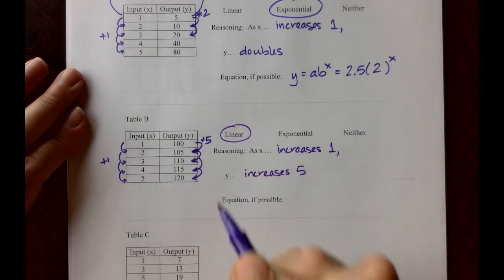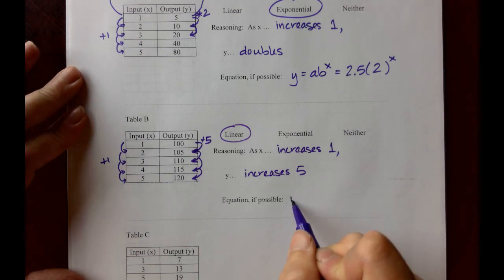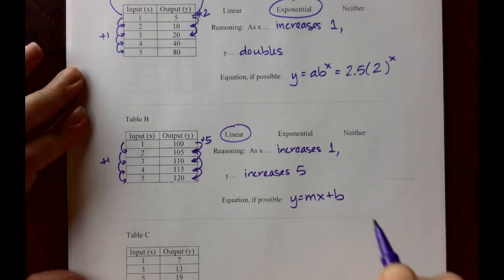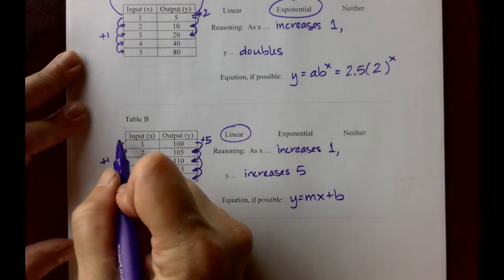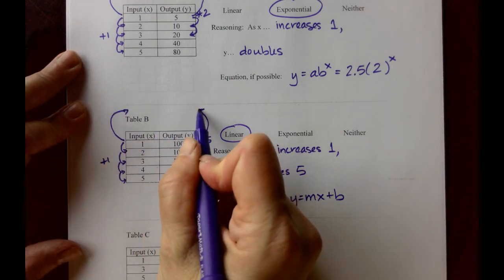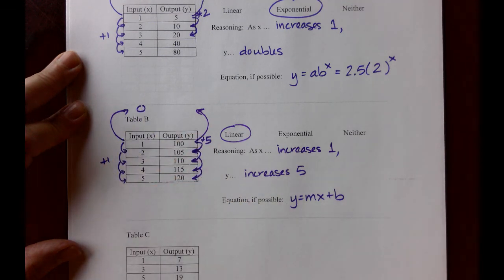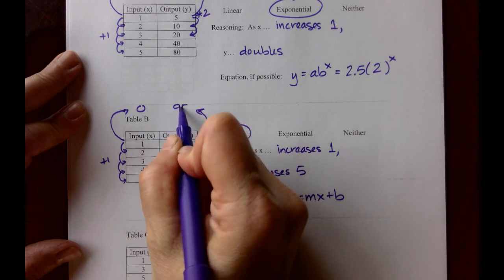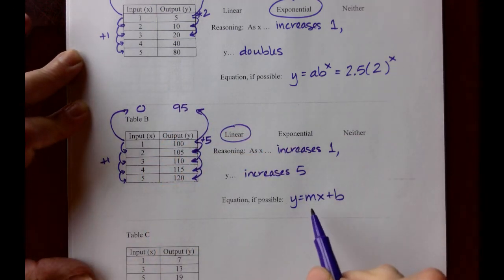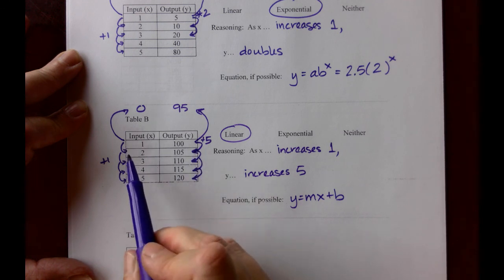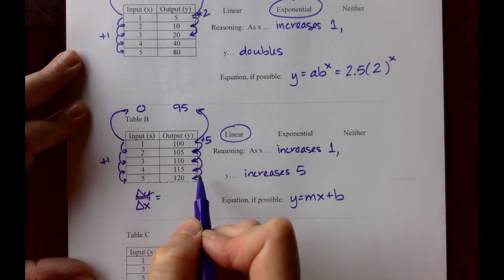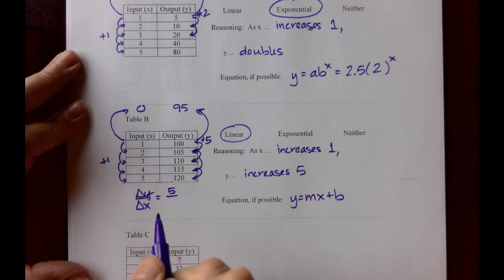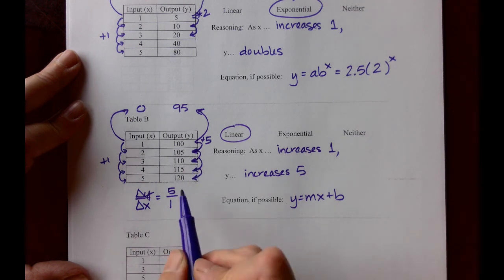That tells us that we have a linear relationship. Our equation would have the form y equals mx plus b, where the b here is our y-intercept, and m is our slope. To find the y-intercept, we can go backward in the table. We can go to x equals 0 by subtracting 1, and we can go to a y value of 95 by subtracting 5. Your slope, the rise versus the run, that's the change in y versus the change in x, and we can tell from our table that the change in y is 5 every time the change in x is 1, and both of those quantities are positive, so your slope is positive 5.